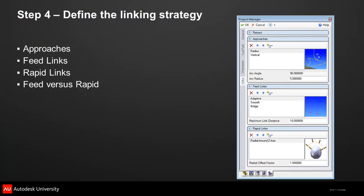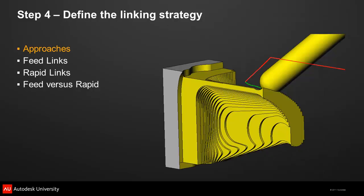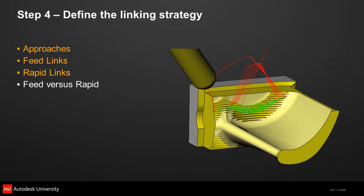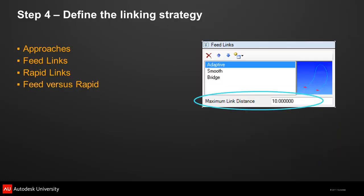The final step in this process is to define the moves the tool makes between the actual cutting passes. For the smoothest surface possible, the manner in which the tool moves from the end of one cutting pass to the start of the next requires finesse and control. Multiple choices in a prioritized list take the guesswork out of which linking methods are preferred. Separate strategies can be created for how the tool approaches the part, how the tool should feed between passes, and how the tool should rapid from one position to another. The usage of feed links versus rapid links is easily controlled with the maximum link distance setting — you only need to define a maximum distance for feed moves, and as soon as the system detects a gap larger than that distance, it'll generate a rapid move.